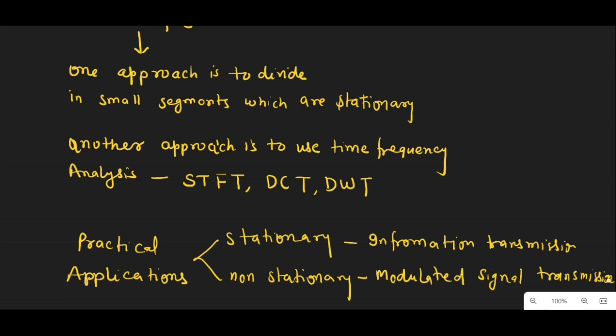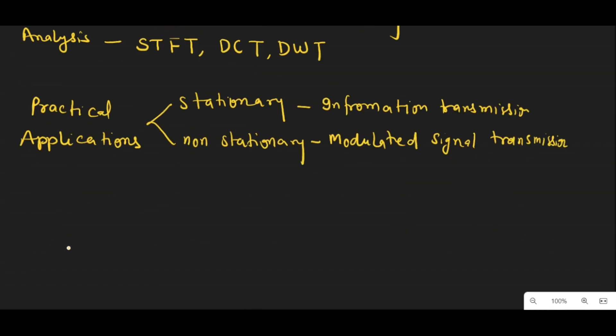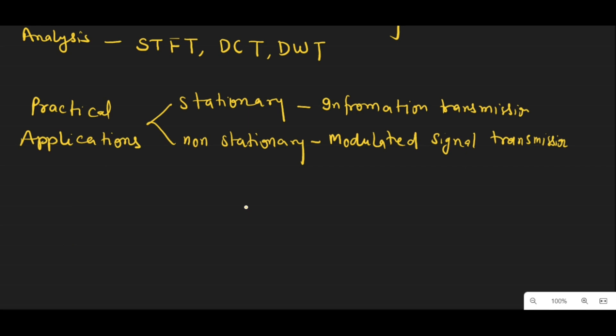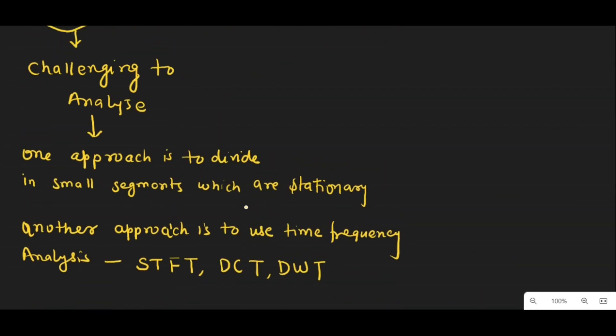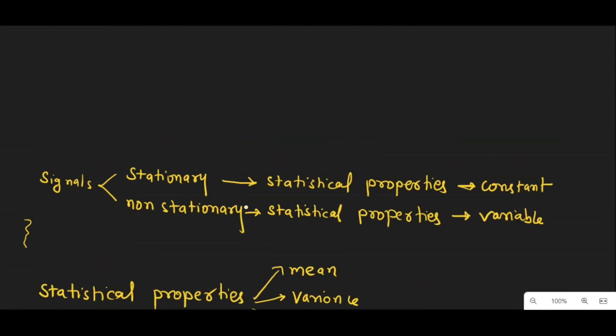In summary, both stationary and non-stationary signals are important in signal processing. Stationary signals have fixed properties that do not change over time, while non-stationary signals have changing statistical properties. Understanding the difference between these two types of signals is essential in many applications of signal processing, and there are various techniques and approaches that can be used to analyze them.